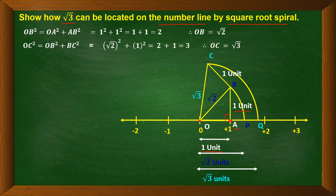By Pythagoras theorem, the square of the hypotenuse equals the sum of the squares of the perpendicular and base. Both OA and BA are 1 unit each, so OB² = OA² + BA² = 1² + 1² = 1 + 1 = 2. Therefore OB = √2. To locate √2 on the number line, we keep the compass pointer at O and with radius OB draw an arc that cuts the number line at point P. So P represents √2.